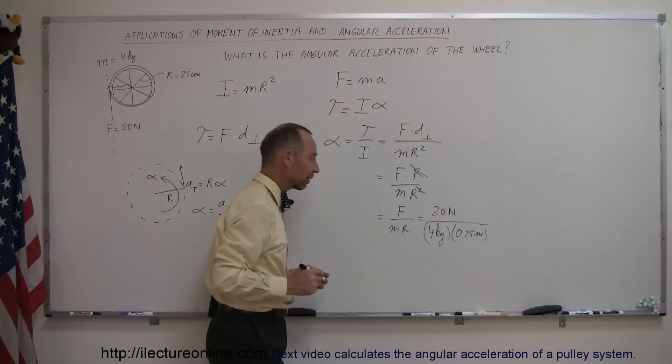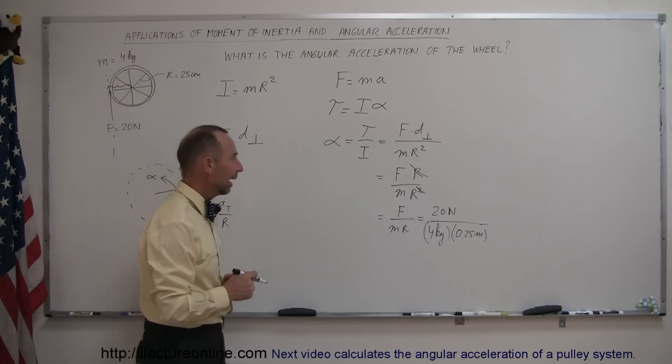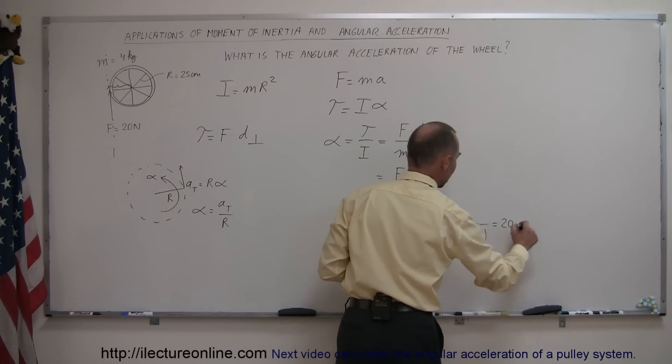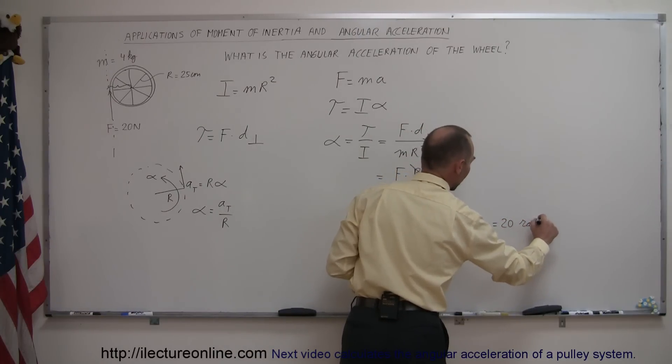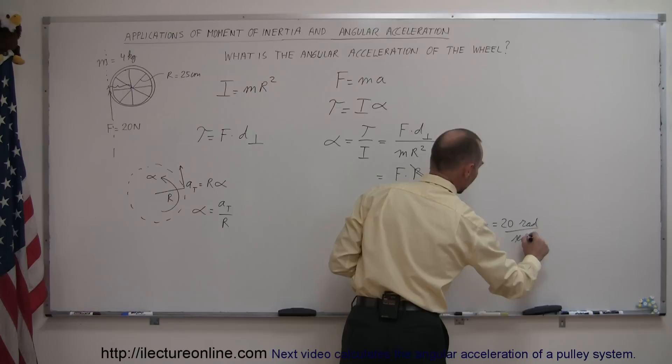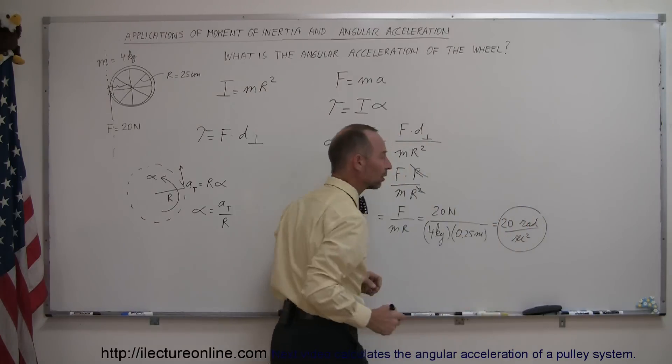And you can see that 4 times 0.25 is 1, and that means that we have an angular acceleration of 20 radians per second squared, and that will be the angular acceleration.